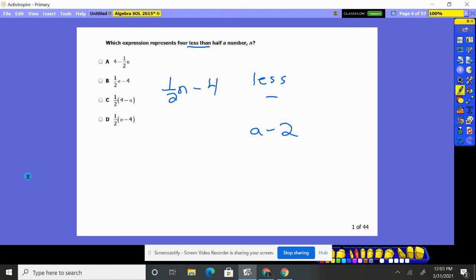And again, with that less than, I'm always thinking what is two less than my age? That means I'm subtracting two from my age. So we're looking for one half n minus four. Choice B is the solution here to problem one.